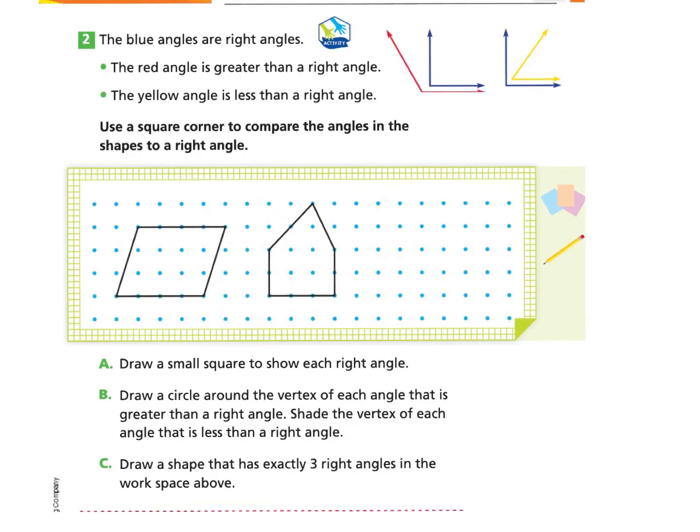Turn to the next page, page 497. We will start with part two. The blue angles are right angles. The red angle is greater than a right angle, which means it's bigger than the right angle. And the yellow angle is less than a right angle — it is smaller than a right angle.